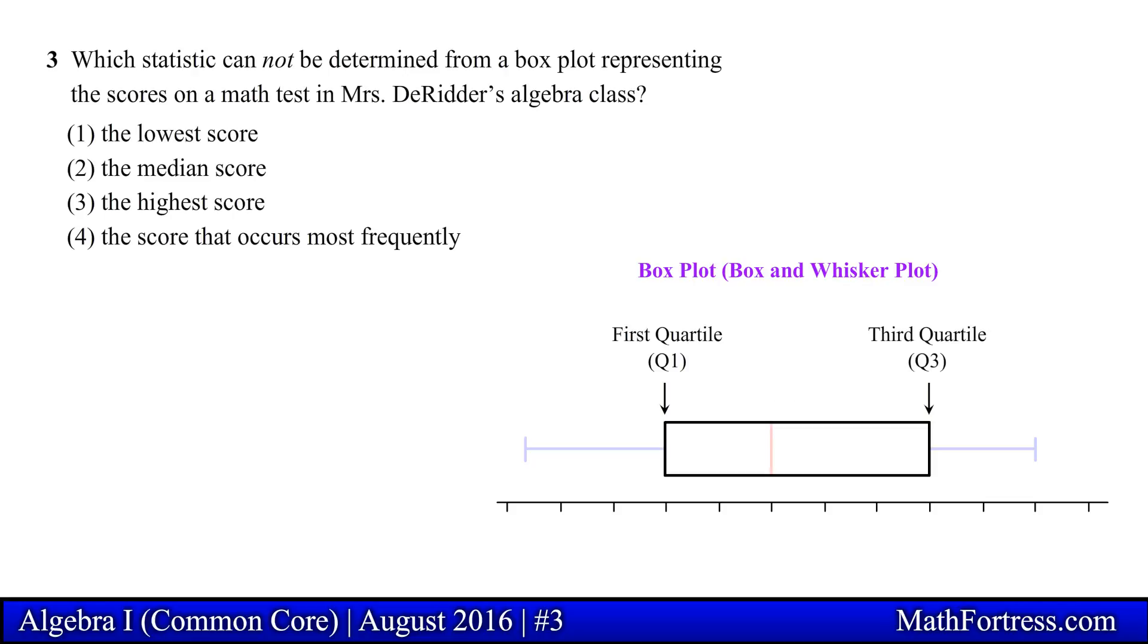Within the box, a vertical line is drawn at the second quartile Q2, which represents the median of the data set. The median is the middle number when the data set is arranged from smallest to largest value.